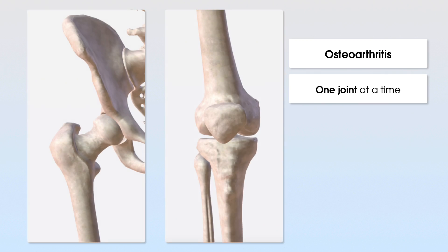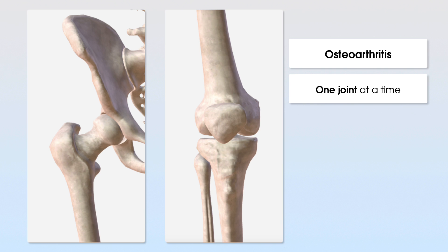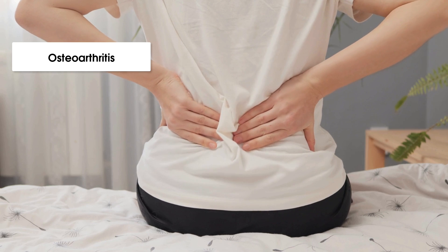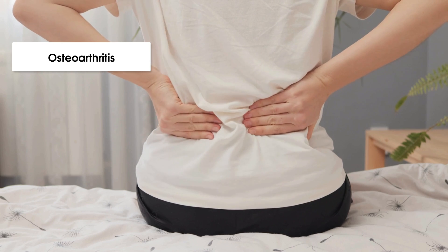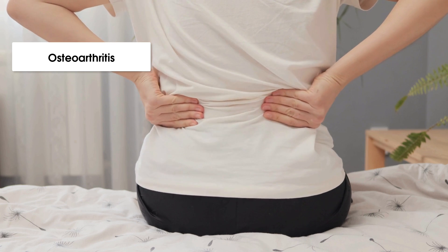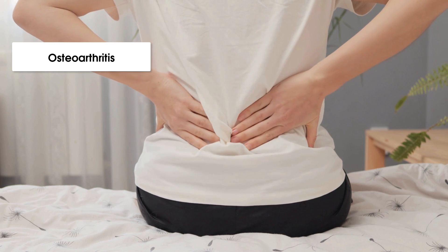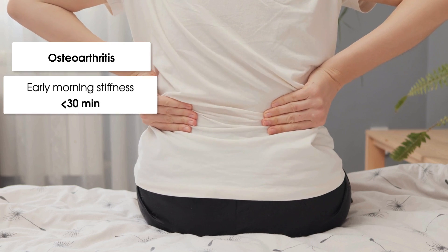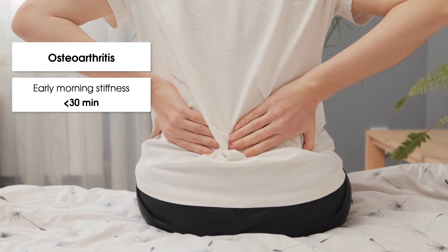Osteoarthritis commonly presents in one joint at a time. The knees and hips are where we see the vast majority of patients in physiotherapy, but other common places affected include the thumb joint. Unlike other forms of arthritis, osteoarthritis does not typically cause significant morning stiffness. If a patient does have morning stiffness with osteoarthritis, it typically lasts for less than 30 minutes.